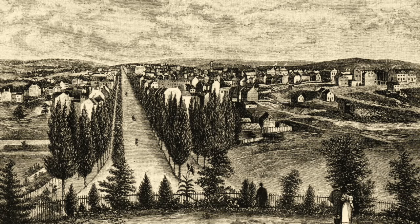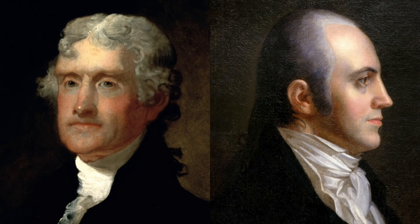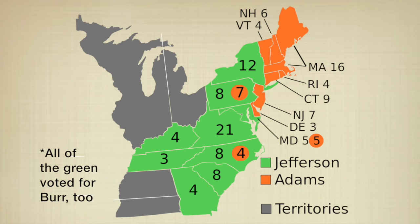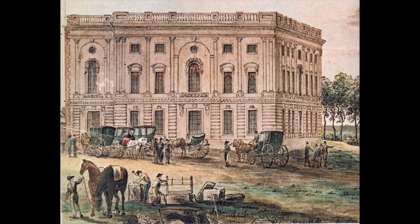First of all, it's important to note that the results were heavily disputed. However, Thomas Jefferson and Aaron Burr both received 73 electoral votes, ensuring the Democratic-Republican victory. One of the Democratic-Republican electors was supposed to not vote for Burr, but he did anyway. So with Jefferson and Burr tied, the House of Representatives had to choose one of them to become President.